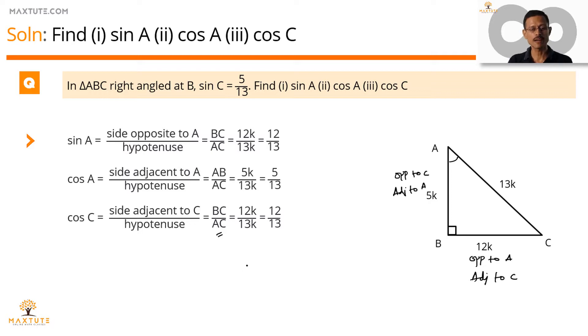Hold on for a minute. This is where the inference part starts. This is a 5 by 13 sin C. This is also a 5 by 13. So sin C and cos A are one and the same. A 12 by 13 and a 12 by 13. These two are also same. What is 12 by 13 in this case? Sin A. In this case, cos C. So let's just take this inference to the next slide.